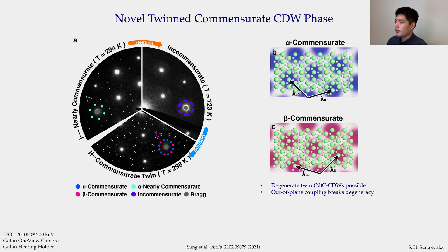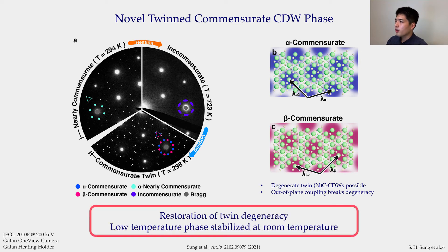Normally, out-of-plane coupling breaks this degeneracy. But something else also happens: the positions of the peaks change. They now line up exactly at commensurate CDW positions, which should be only stable at low temperature. Because they are twinned and because they are commensurate with the lattice, we name it the commensurate twin phase. So we've restored twin degeneracy and stabilized a low-temperature phase at room temperature.